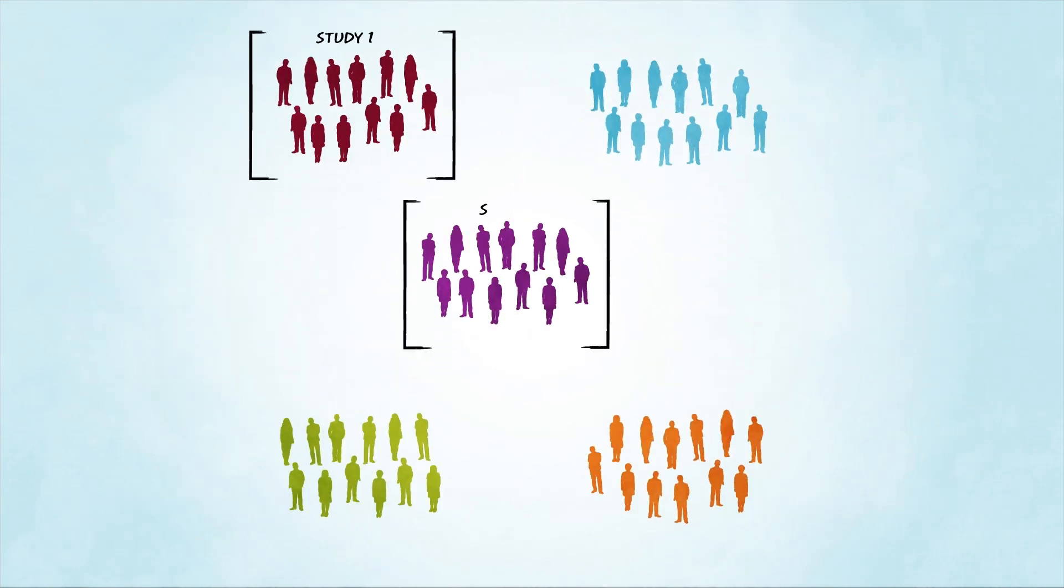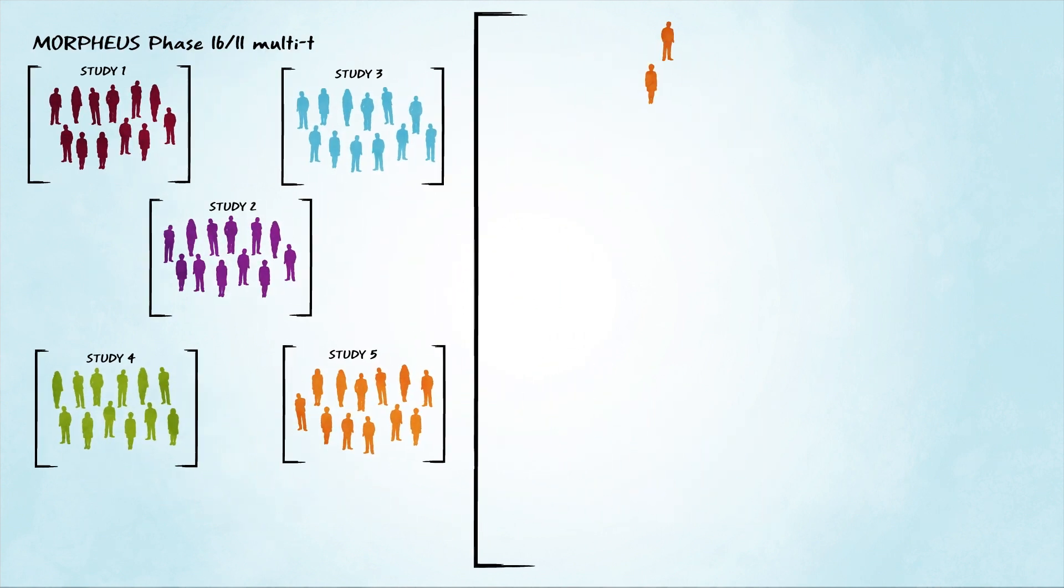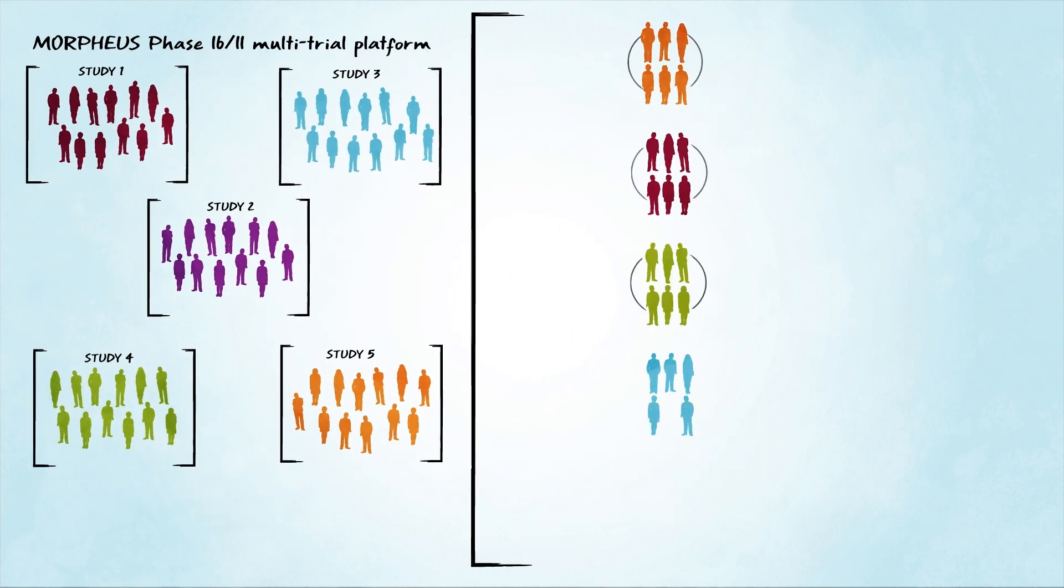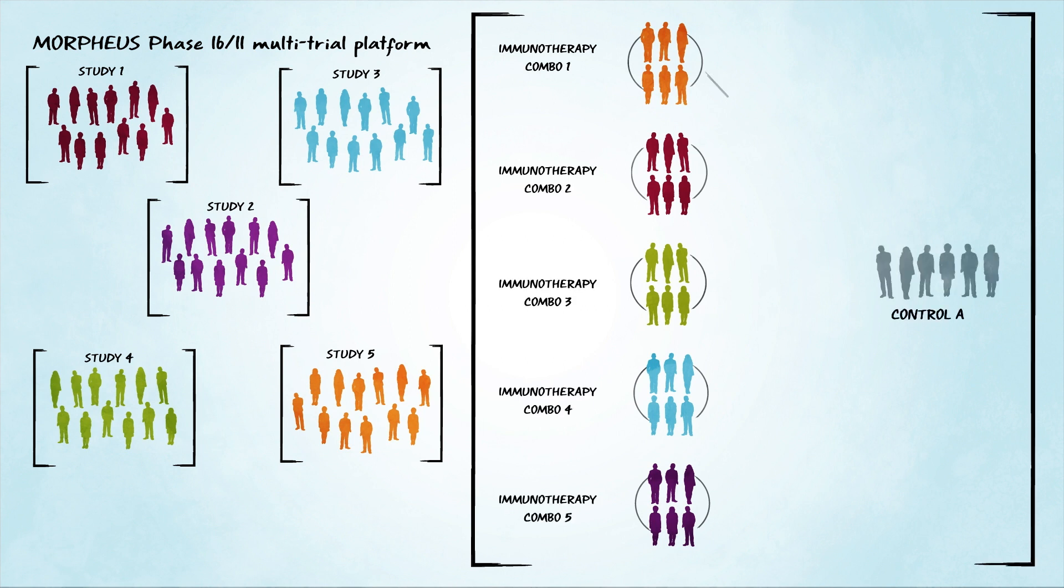Then, instead of setting up many individual Phase I studies, we set up multiple randomized study arms in parallel that compare new immunotherapy-based combinations against an established medicine, commonly called a control.